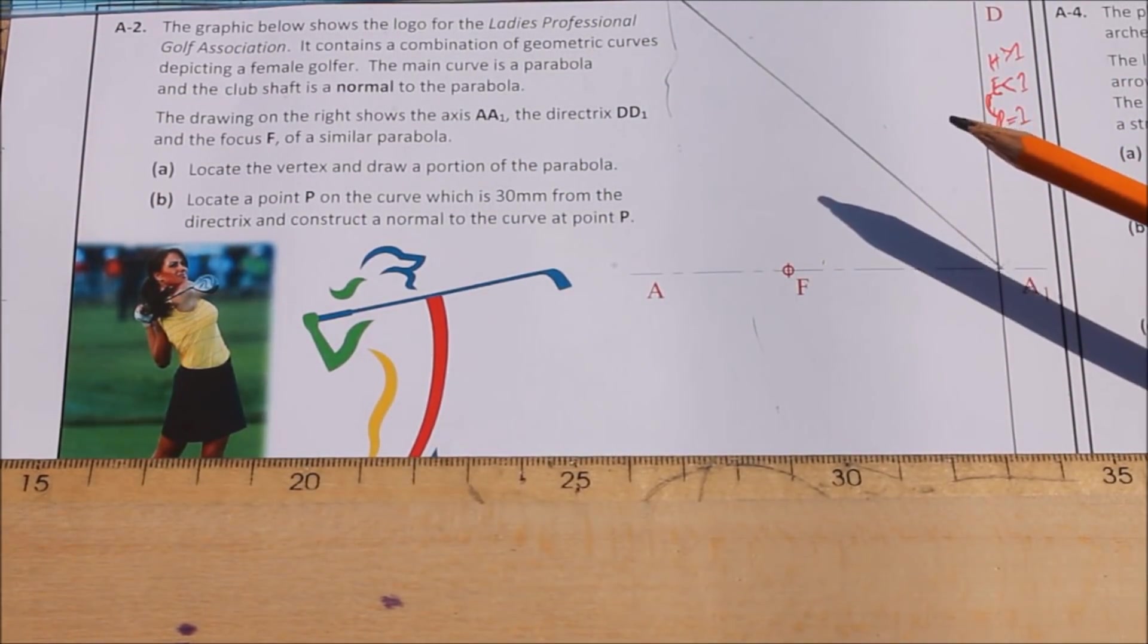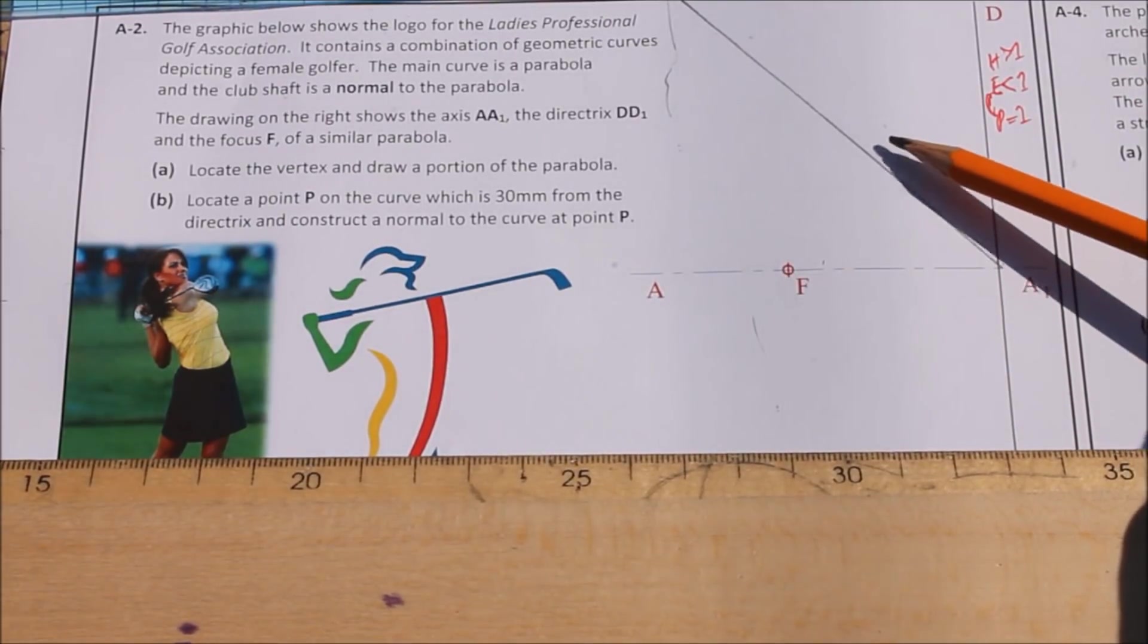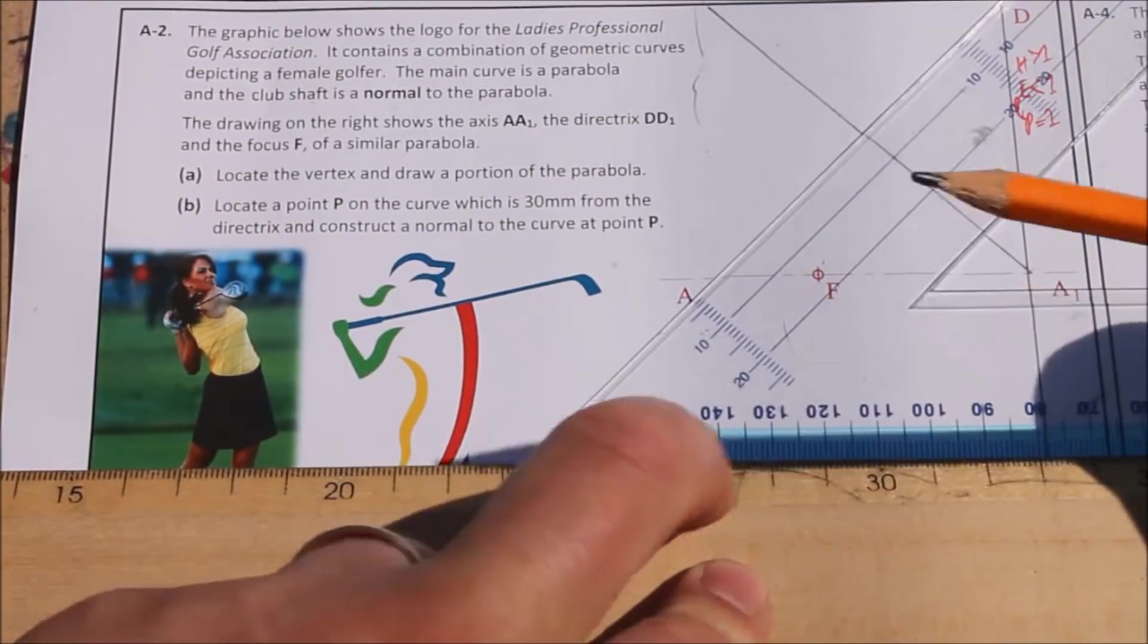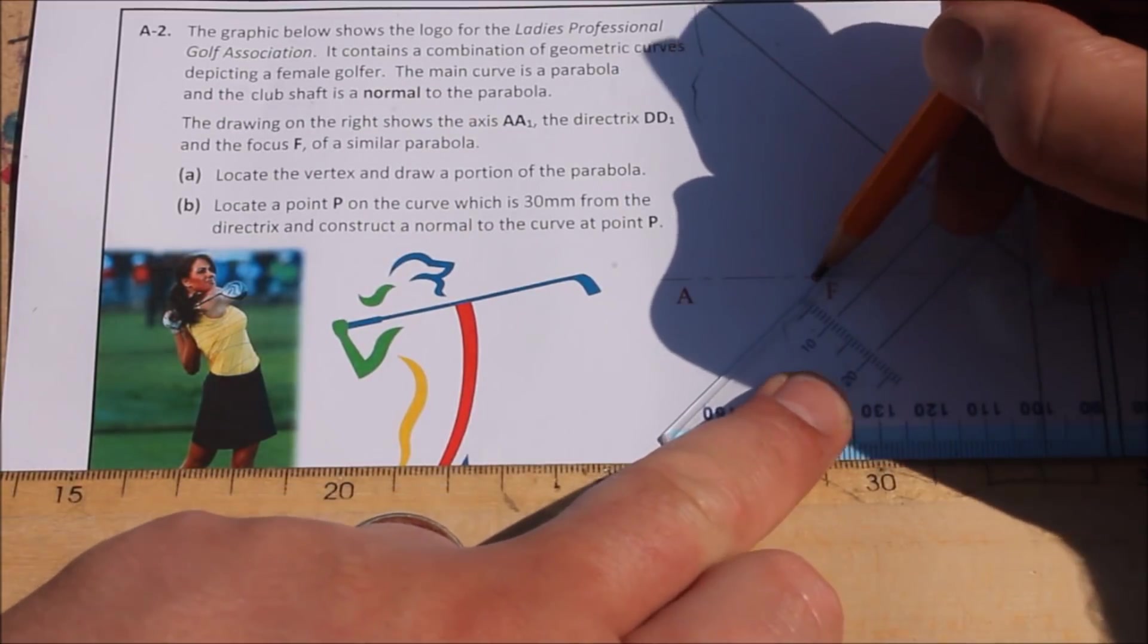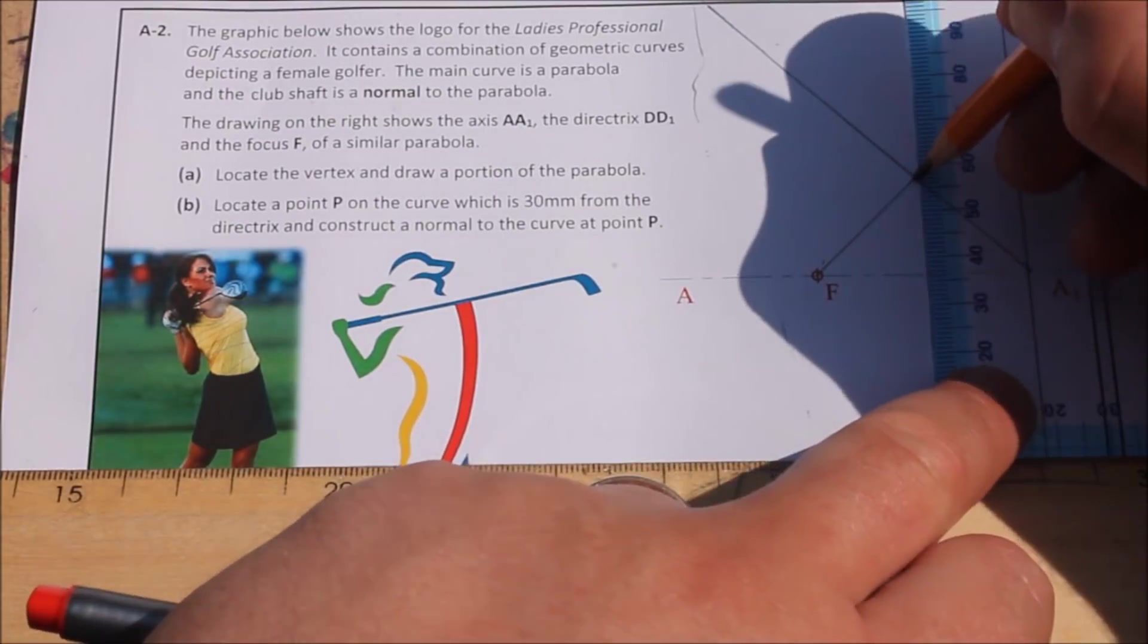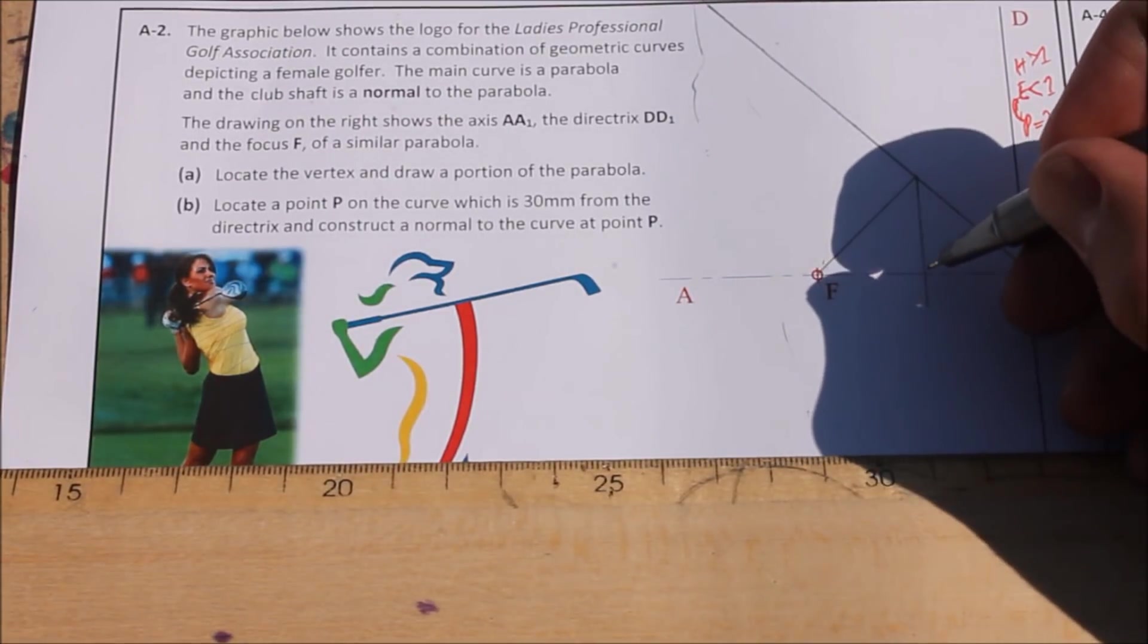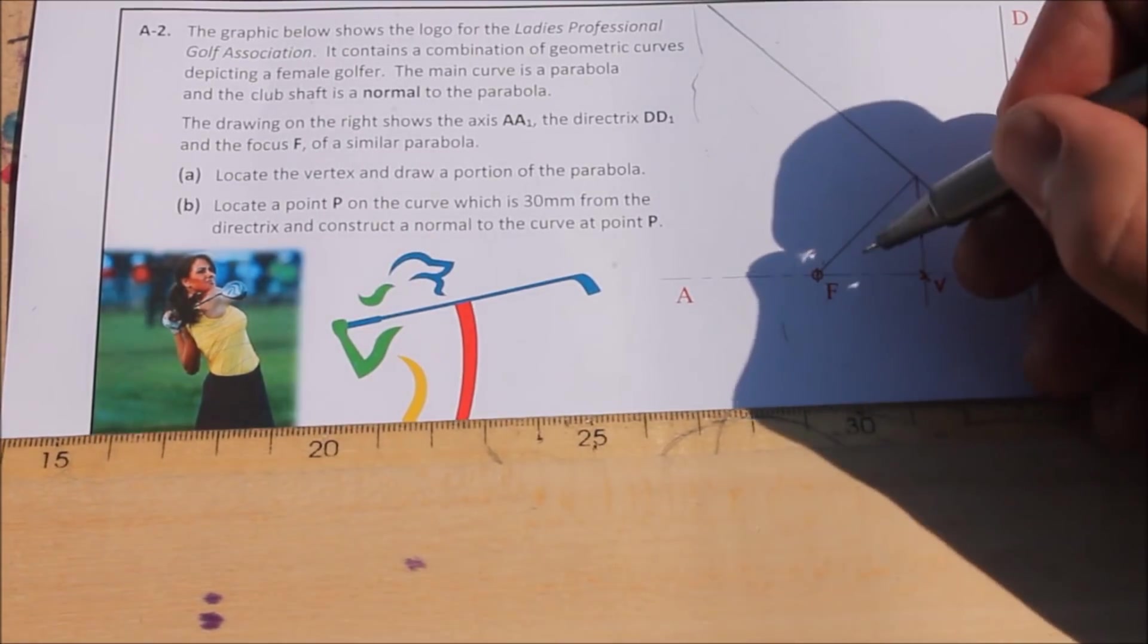no matter which conic section you're doing, either hyperbola, ellipse, or parabola, once you find your line of eccentricity, you always go back 45 degrees from your focal point to hit your line of eccentricity. And directly below that is your vertex. So that's our vertex here. We came straight down there, and this is at 45 degrees.